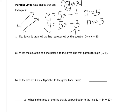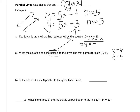Let's look at some examples. Ms. Edwards graphed a line represented by a given equation. Part A says: write the equation of a line parallel to the given line that passes through the point (8, 4). Since we need the slope, we must get y by itself first. Subtracting and simplifying gives us 2y = -x + 10.